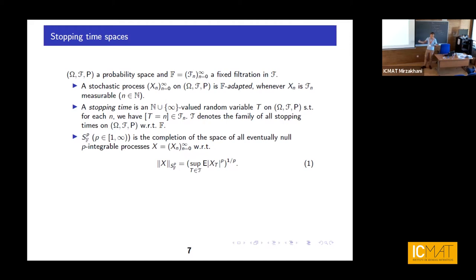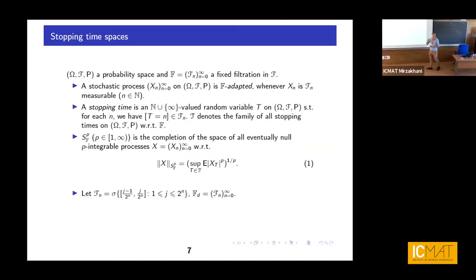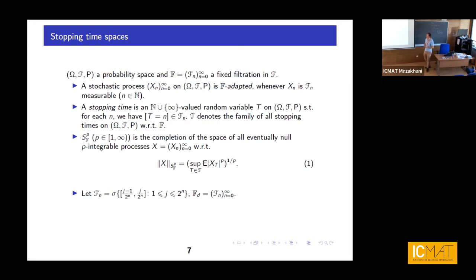From the point of view of Banach space theory there are only two relevant separable infinite-dimensional LP spaces: little lP and capital LP. Among atomless probability measures, only the Lebesgue measure on the unit interval is important, because by Maharam's theorem you can reduce everything either to the unit interval or to the Cantor set with the Haar measure. So from our point of view, only the dyadic tree filtration will be relevant, because any other filtration related to atomless probability measures is reducible to this one.